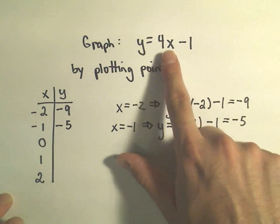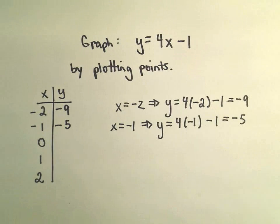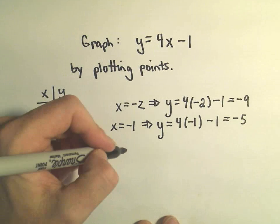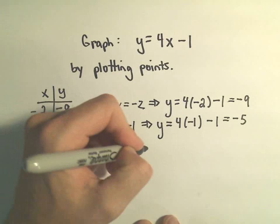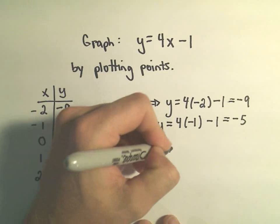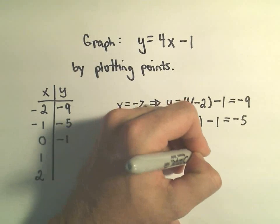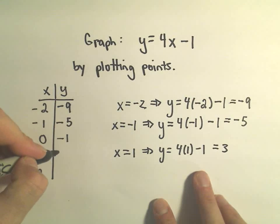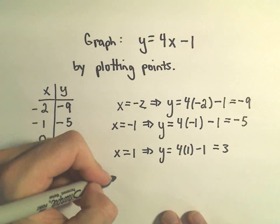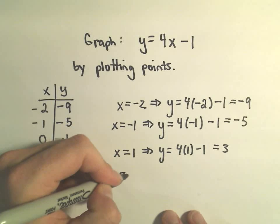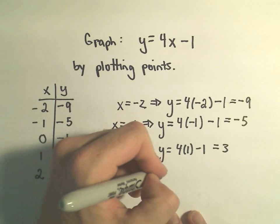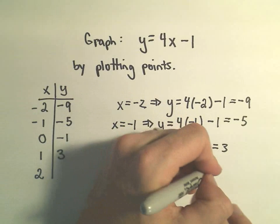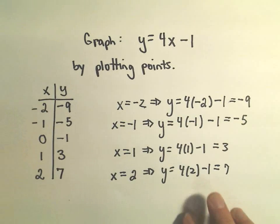If we plug 0 in, we'll just be left with negative 1 — that one's not too bad. If we plug in x equals positive 1, that gives y equals 4 times 1 minus 1, and 4 minus 1 equals 3. And then lastly, one more point: if I plug in 2, we get y equals 4 times 2 minus 1, which is 8 minus 1, or 7.